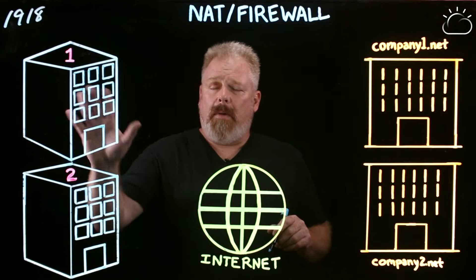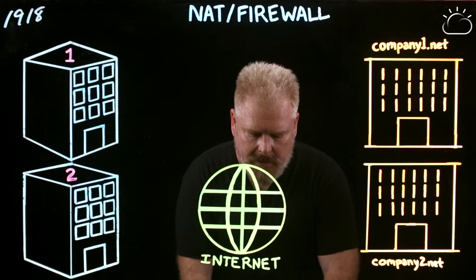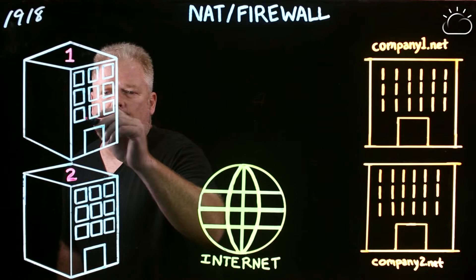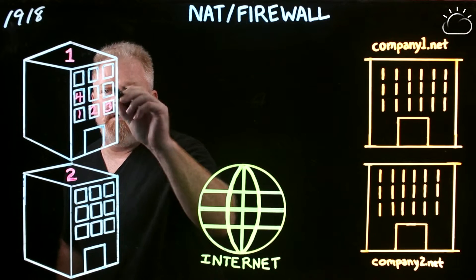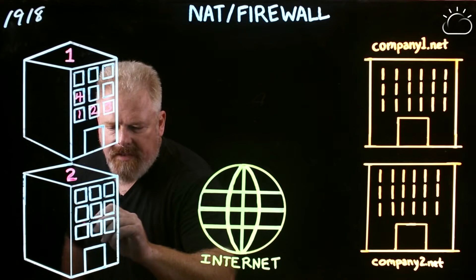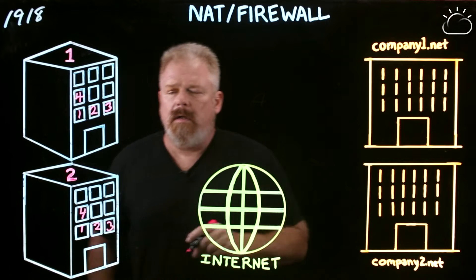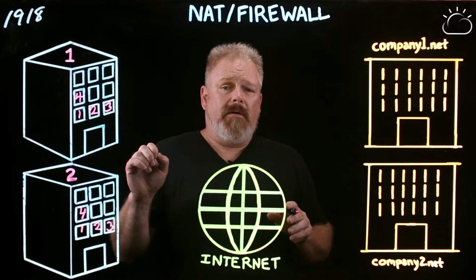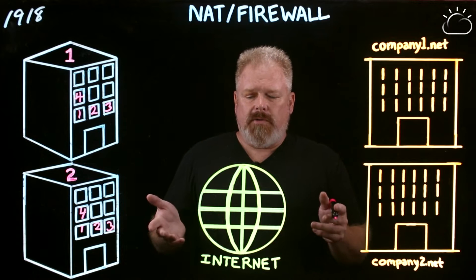So over here we have our apartments, apartment buildings. We have apartment building 1, we have apartment building 2. And within those apartments we have apartment 1, 2, 3, 4, etc. And over apartment building 2, lo and behold, we have the same apartment numbers. The only thing that really differentiates apartment 1 in building 2 and apartment 1 in building 1 is their street address.